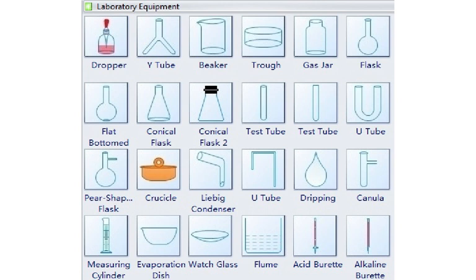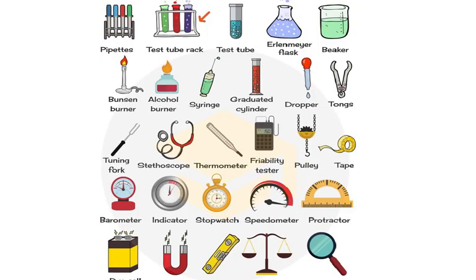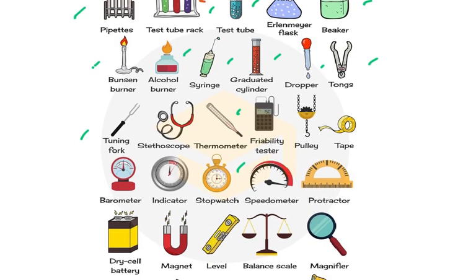Now we look at the names of common laboratory equipment: dropper, Y-tube, beaker, trough, gas jar, flat-bottomed flask, conical flask, test tube, U-tube, pear-shaped flask, crucible, cannula, measuring cylinder, evaporation dish, watch glass, acid burette and alkaline burette. Also: pipettes, test tube rack, beaker, tongs, dropper, graduated cylinder, syringe, alcohol burner, Bunsen burner, tuning fork, stethoscope, thermometer, stopwatch, and magnifier. These are the equipment names relevant for biology — I won't discuss those needed for other subjects.